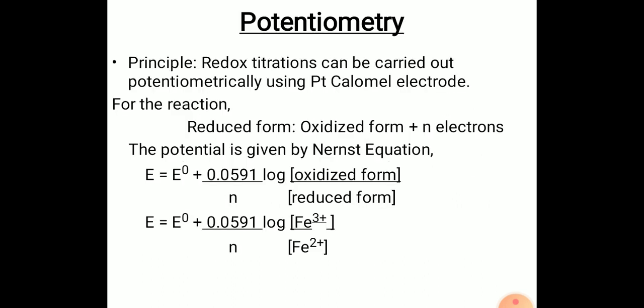Now we will move to the next experiment, that is potentiometry. In lab also you have this experiment, potentiometric estimation of FAS. The principle of this potentiometry method is this is a redox reaction as here both oxidation and reduction are taking place. This redox titration can be carried out potentiometrically using platinum calomel electrode in manner similar to acid-base neutralization. Here the reaction is reduced form gives rise to oxidized form plus n number of electrons.